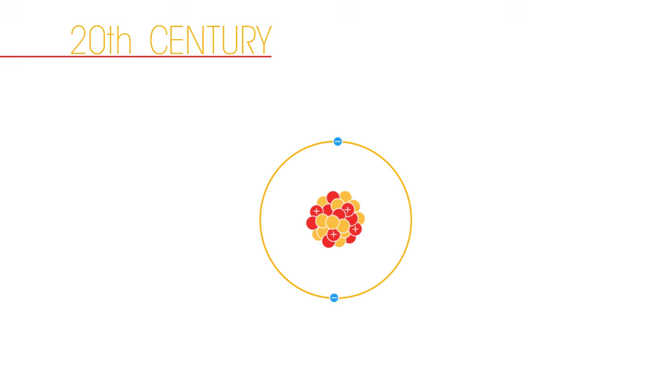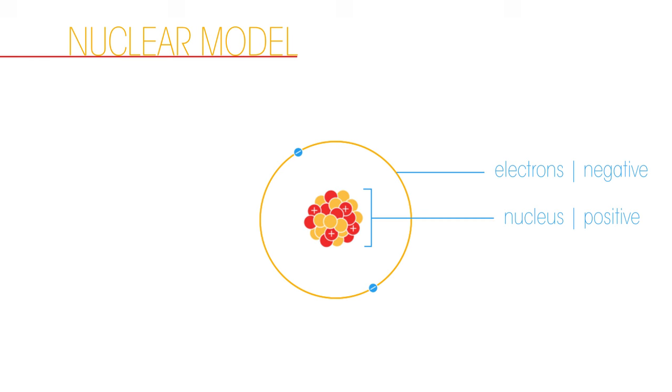Since his discovery, atoms have been described as having a central nucleus of positive charge which is orbited by negatively charged electrons. This is known as the nuclear model of the atom.